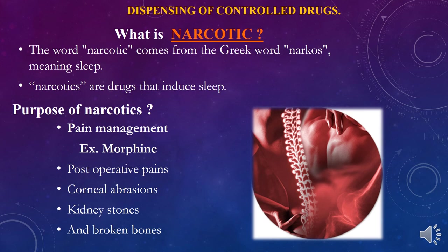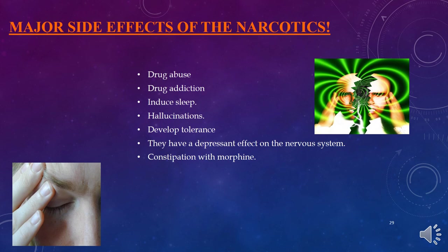The last part is the dispensing of controlled drugs. Controlled drugs are those that fall under the NDPS — Narcotic Drugs and Psychotropic Substances — category. The word 'narcotics' comes from the Greek word 'narcos,' meaning sleeping; these are sleep-inducing drugs used for pain management. A prime example is morphine, used for post-operative pain, renal colic, and broken bones. Major side effects include drug abuse, addiction, sleep induction, hallucination, tolerance development, CNS depression, and constipation.